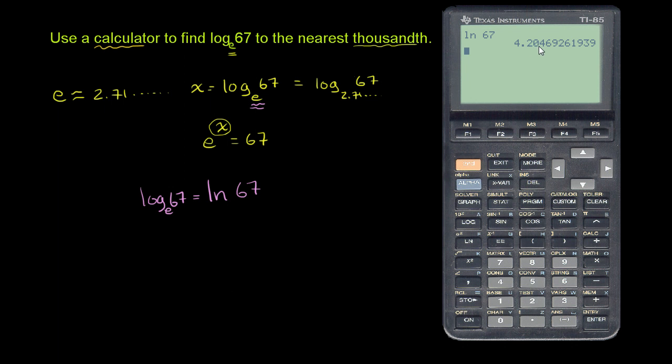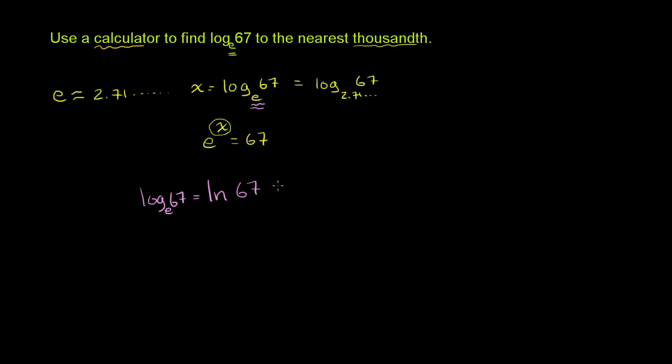So 4.20469, and we want to round to the nearest thousandth. This is the thousandth place right here, this 4. The digit after that is 5 or larger, it's a 6, so we're going to round up. So this is approximately equal to 4.205.